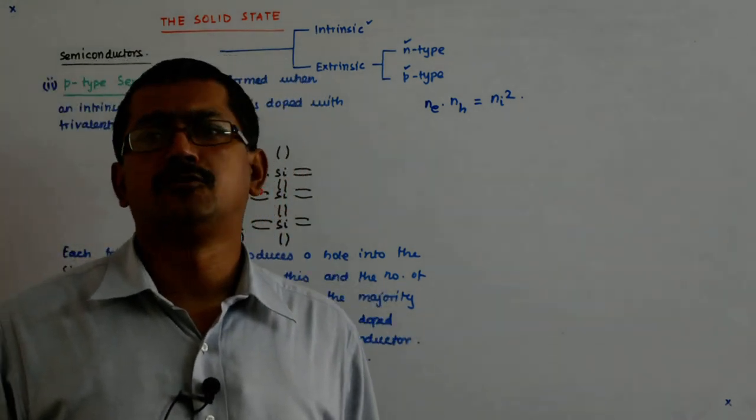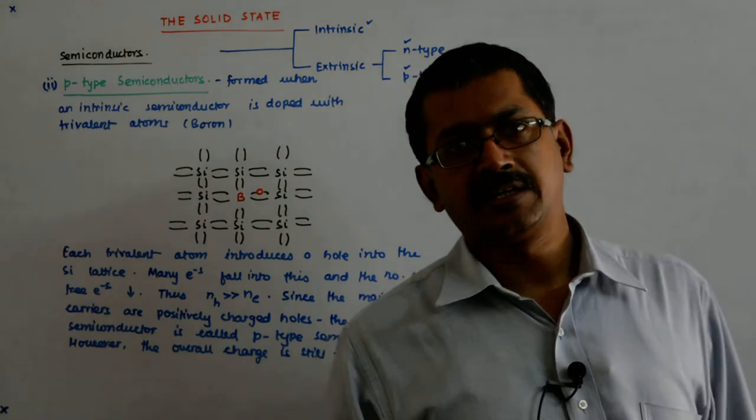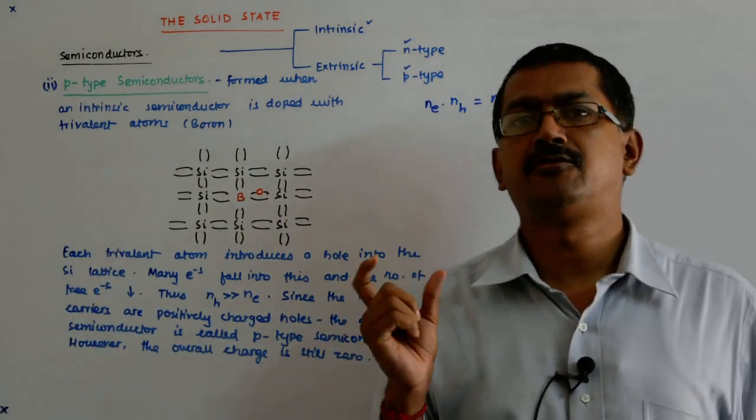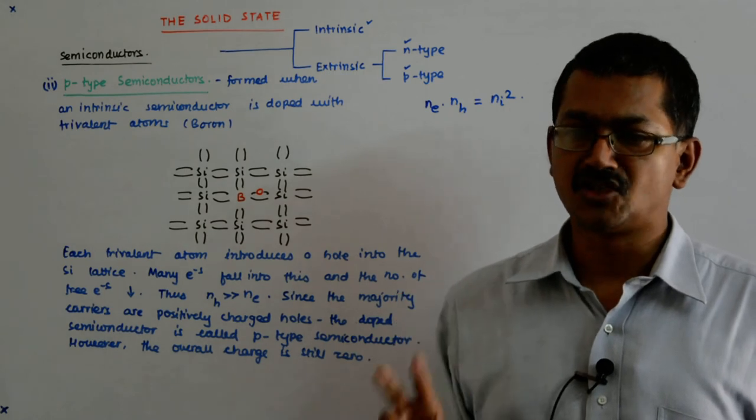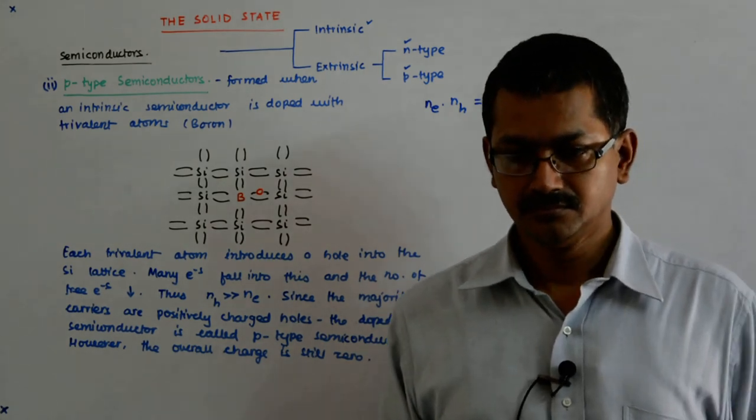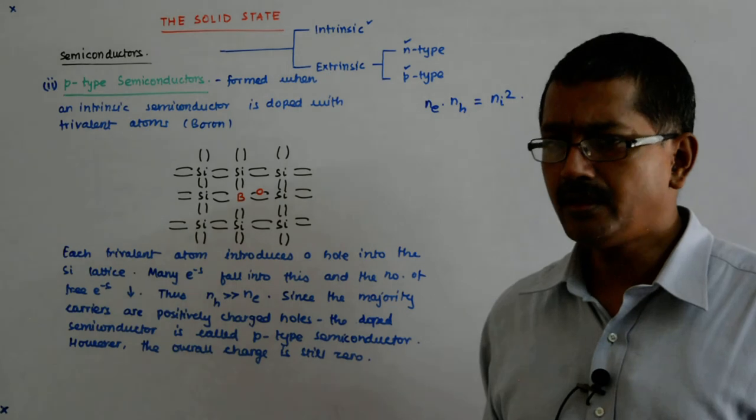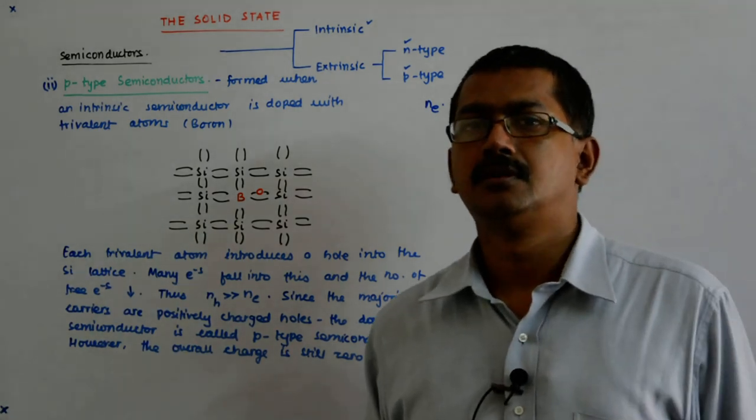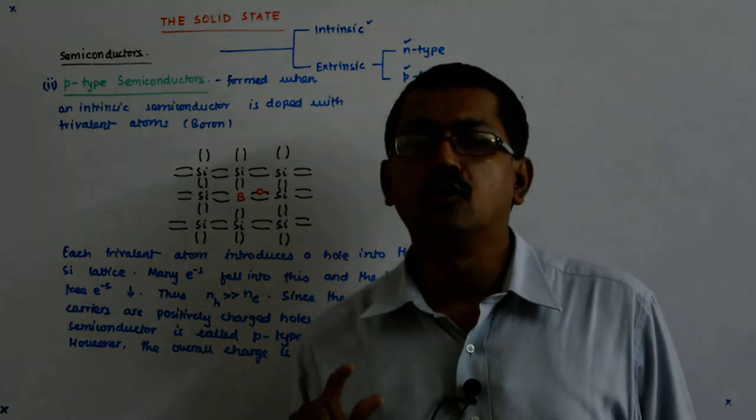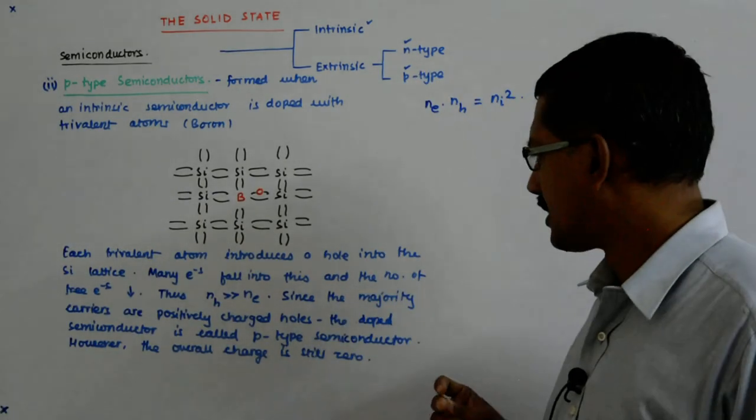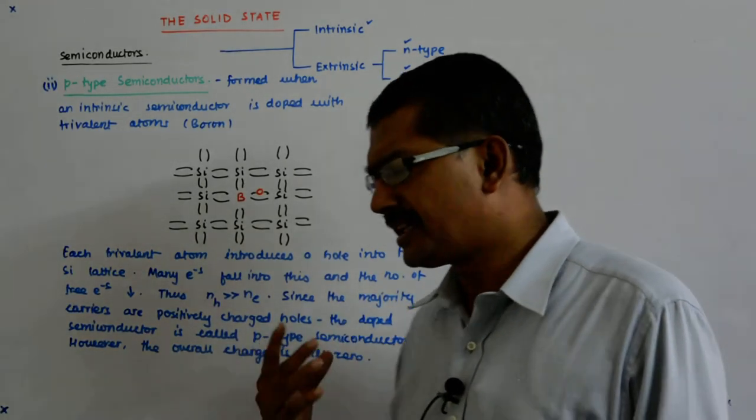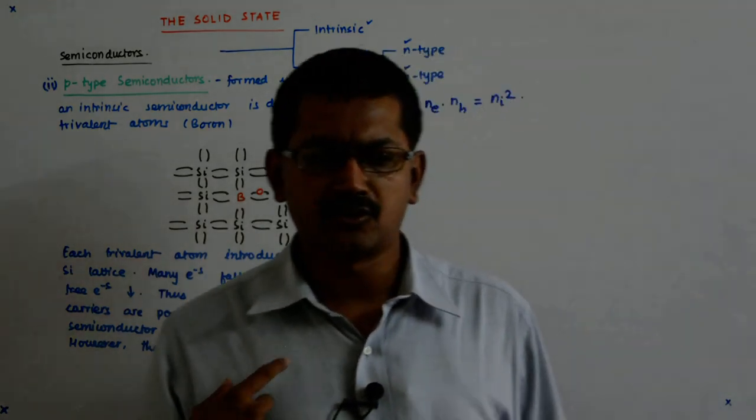But it is still not clear how we have been able to gain greater control over the flow of electrons. That will be clear when you actually form a P-N junction. And that becomes a diode.